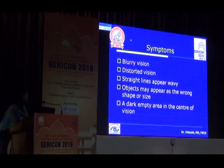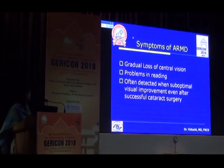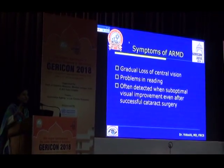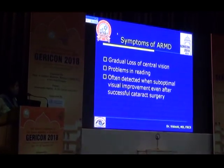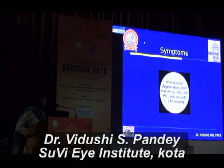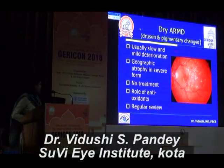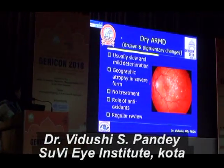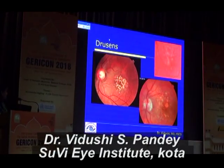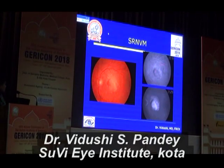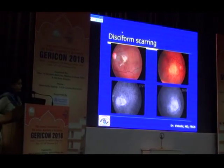In ARMD — age-related macular degeneration — there are depositions of certain materials or neovascular membranes which leak fluid. The symptoms are blurry vision, distorted vision, straight lines appearing wavy, and gradual loss of central vision, with problems in reading. Often ARMD is so subtle to see on the fundus that it is detected only after a successful cataract surgery when the patient does not have good visual recovery. Things are distorted, straight lines are wavy, reading is a problem, and sometimes there can be a central gap. This picture shows drusen. In wet ARMD there is hemorrhage and leakage, and in late stages there is geographic atrophy — this carries an extremely poor prognosis with not much treatment available.